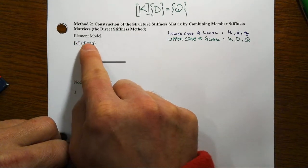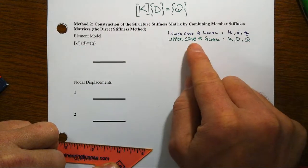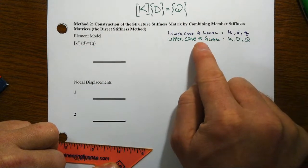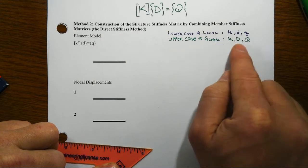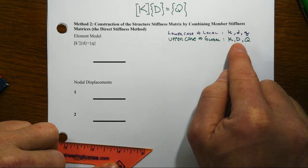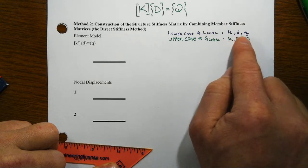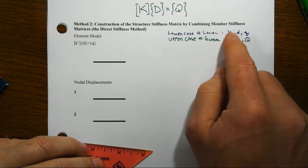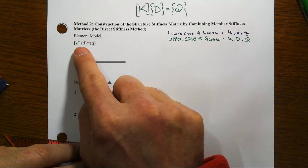And so at the local level or the member level, we have a similar equation that we're looking at. And notice here that we've got capital letters or uppercase represents the global system, the entire system taken all at once, and then lowercase is going to be associated with local cases.